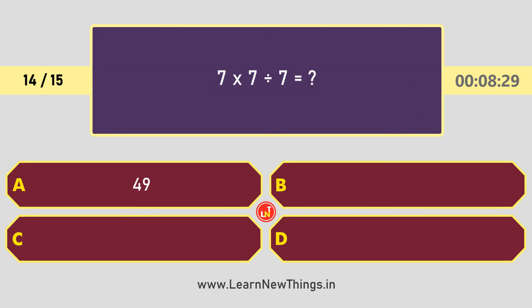7 into 7 divided by 7 is equal to? The answer is 7.